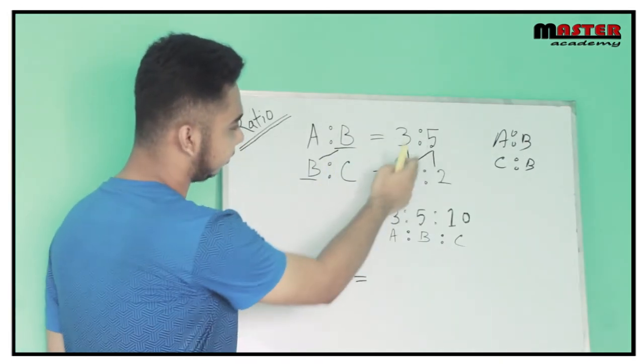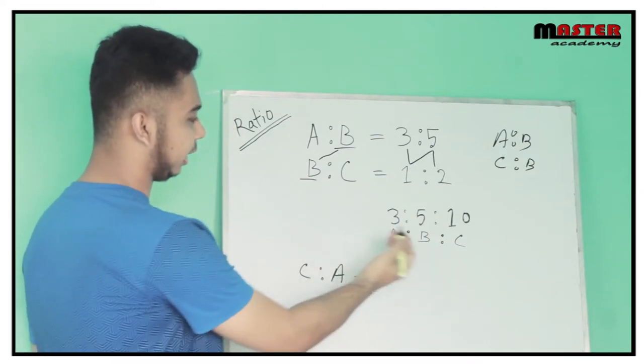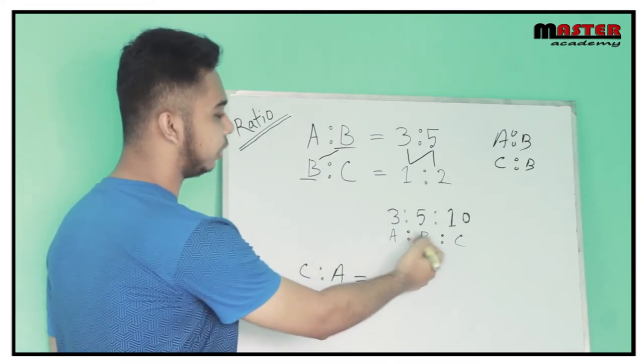3 times 1, 5 times 1, and 1 times 5, 2 times 5 equals 10. Again, A is to B, and B is to C.